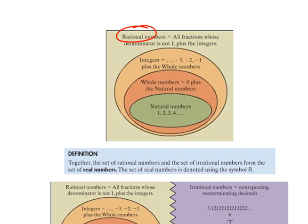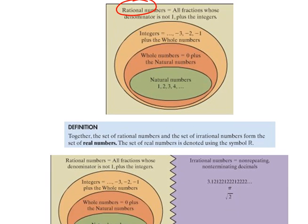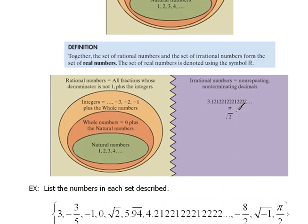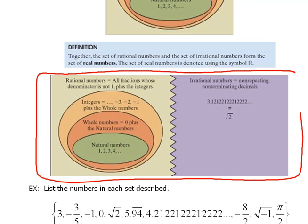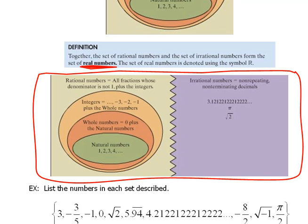But now if there are rational numbers, there have to also be irrational numbers. Things that cannot be written as a fraction. And those are things like pi or the square root of 2 or those non-terminating, non-repeating decimals. Those are the irrational numbers. When we join the irrational numbers with the rational numbers, the entire set that we now have is called the real numbers. And that's what we'll be working with in this class for the first part of it.